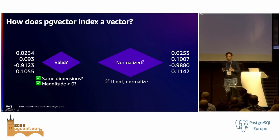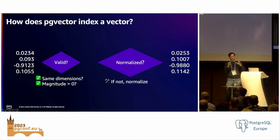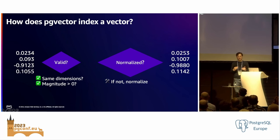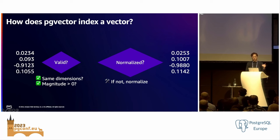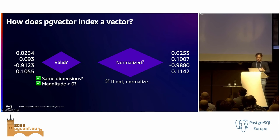Normalization in the math sense means setting the vector to have a magnitude of 1, which is different from database normalization. With the cosine distance, normalizing allows us to eliminate some division, meaning those lookups in the index could be a lot faster. pgvector will check if a vector is normalized before it inserts into the index, and if not, it normalizes it. Likewise on the query, it does the same check and queries against the normalized vectors. This is nice because it saves us work in the long term and allows us to focus on how we're actually indexing things.